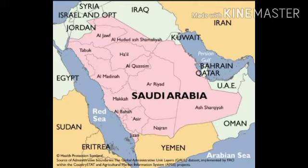In the east, we have the Persian Gulf, Qatar, Bahrain, and the United Arab Emirates or UAE. In the south, we have the Arabian Sea, Oman, and Yemen, and in the west, we have the Red Sea. We can also see the location of Saudi Arabia on the given map.